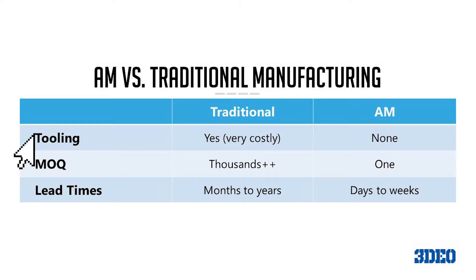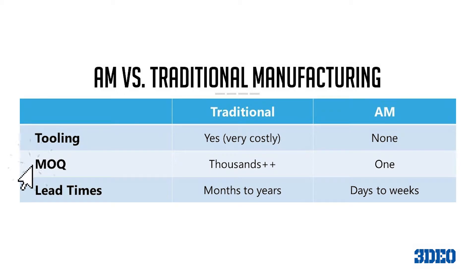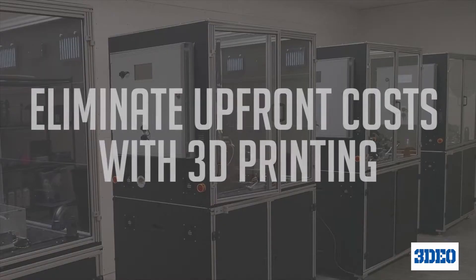Let's talk about the difference between metal additive manufacturing versus traditional manufacturing. In my mind, it comes down to three main categories. The first category is tooling or fixturing, dealing with upfront costs. The second main category is lead times — how long does it take to get your first part? And the third category is minimum order quantities. In all three categories, additive manufacturing really shines.